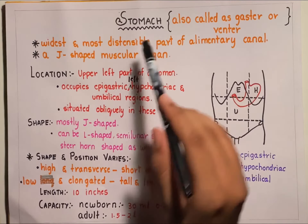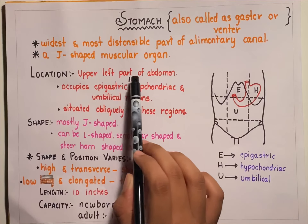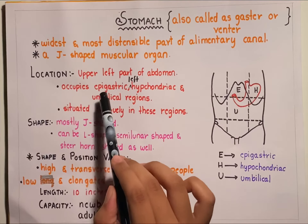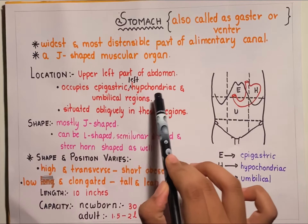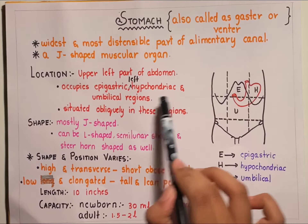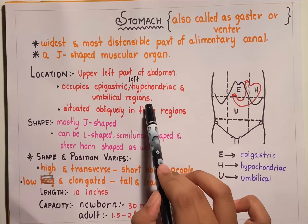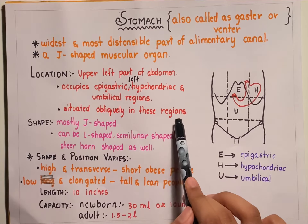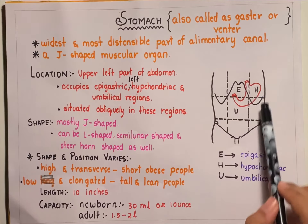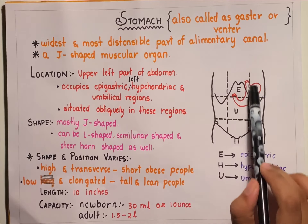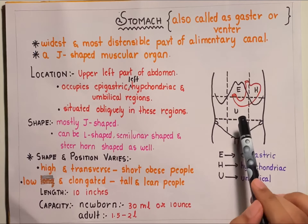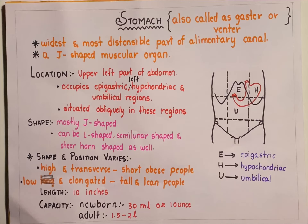The stomach is located in the upper left part of the abdomen. It occupies the epigastric region, the left hypochondriac region and the umbilical regions, and is situated obliquely in these regions. The abdomen has been divided into nine regions by clinicians to understand the positions of various abdominal viscera easily.